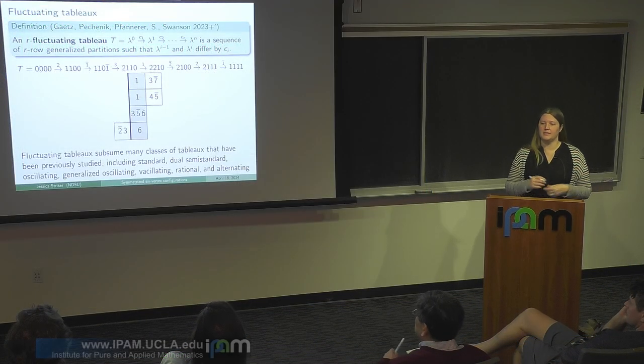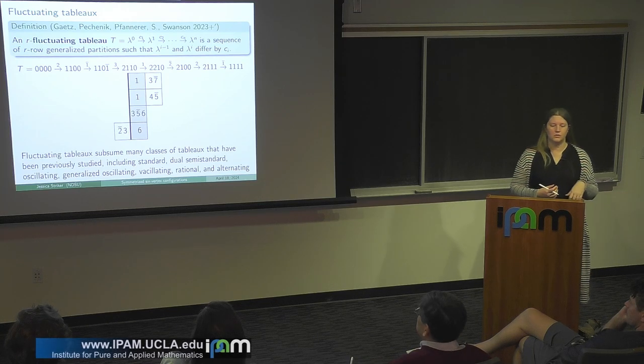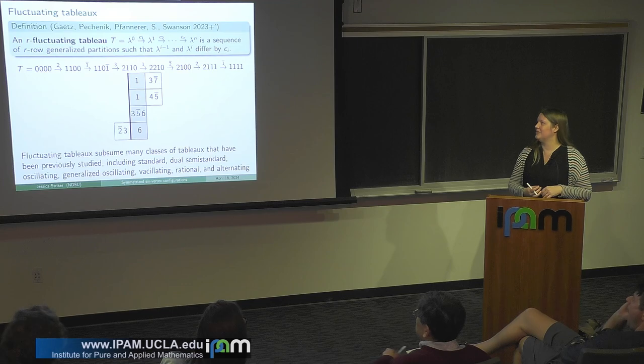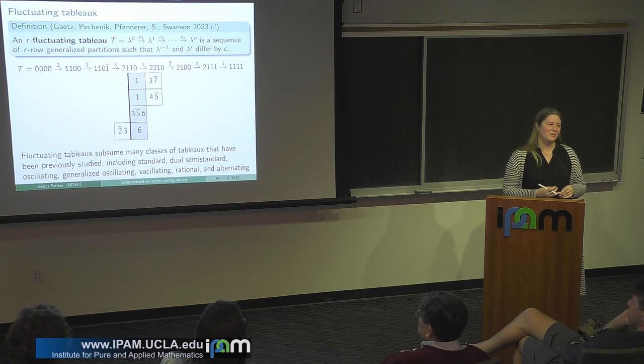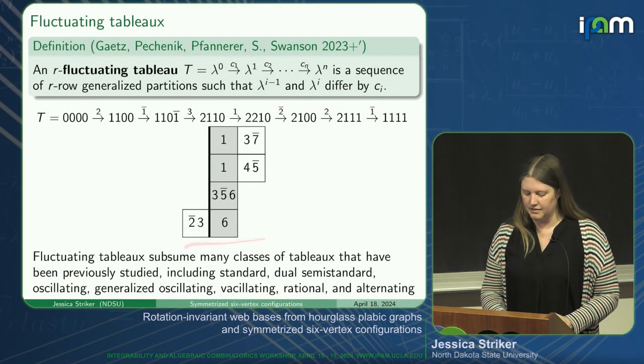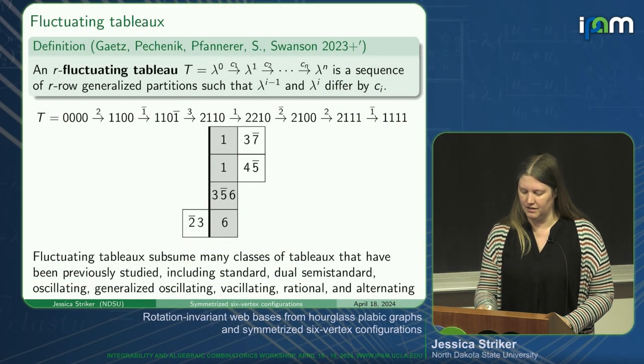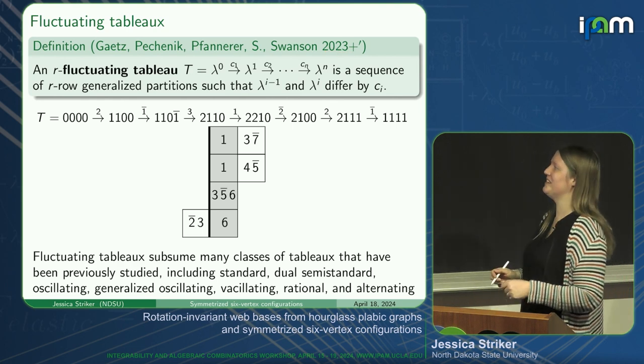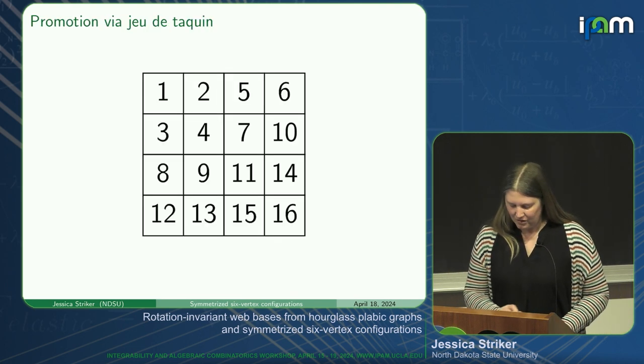We're going to look at some dynamics of tableau that relate to actions on these webs. To have all the properties we needed for these tableau, this really is the right level of generality. A lot of the tableau combinatorics was not written down at the level of generality we needed, so we ended up needing to write a whole extra paper just analyzing these tableau. If you're interested in how exactly any of these tableau algorithms work on the level of fluctuating tableau, you can look at the paper with 'tableau' in the title that we put on the archive last year.